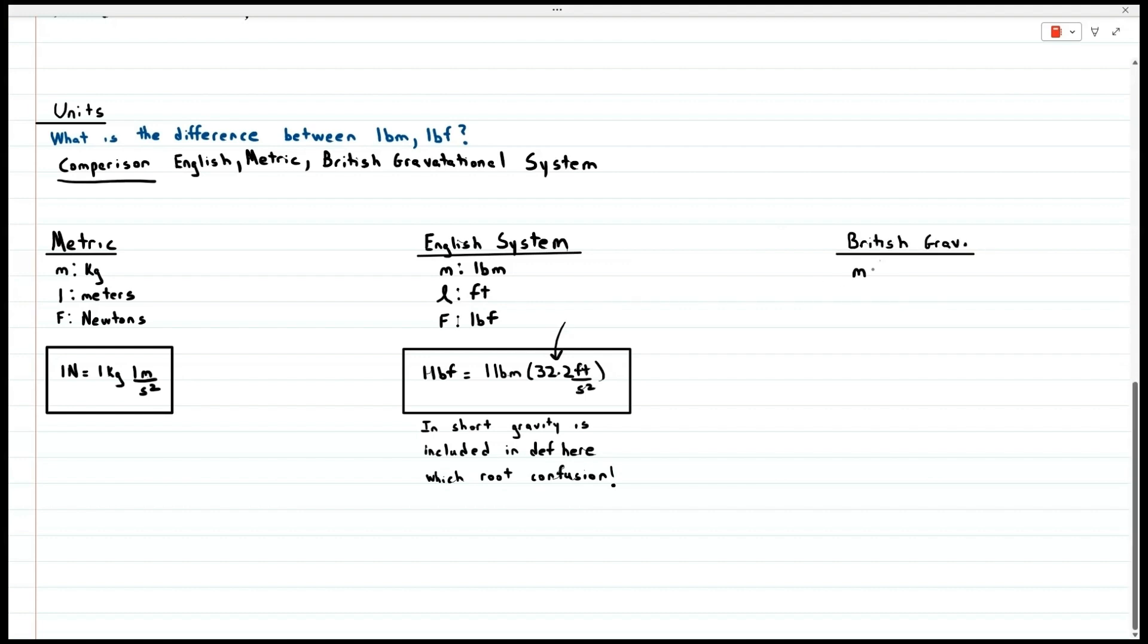Let's explore the British gravitational system. Mass in slugs, the length in feet, and the force again in pound force. Where a slug is defined as 32.2 pound mass, it's pretty heavy. Let's use the relationship between force and mass in the English system to find the relationship between force and mass in the British gravitational system using the definition of a slug.